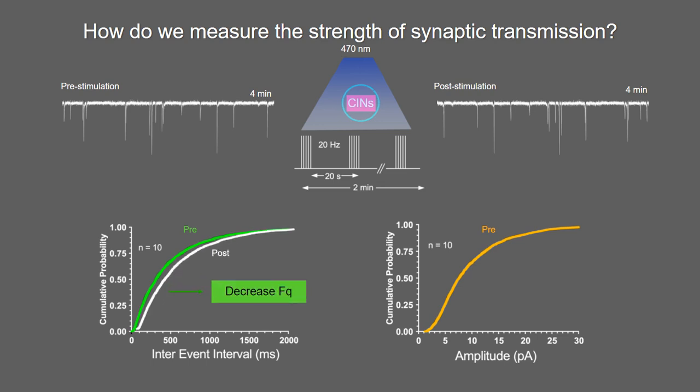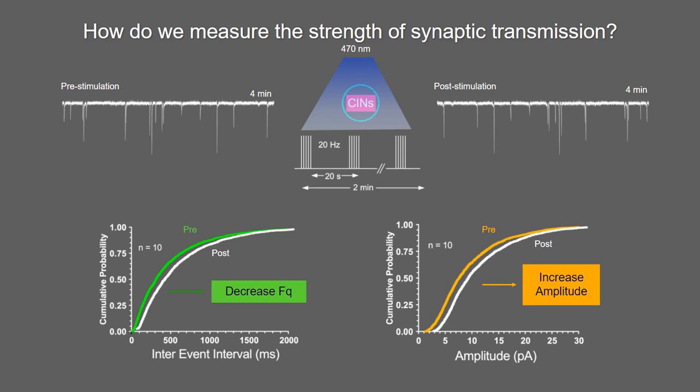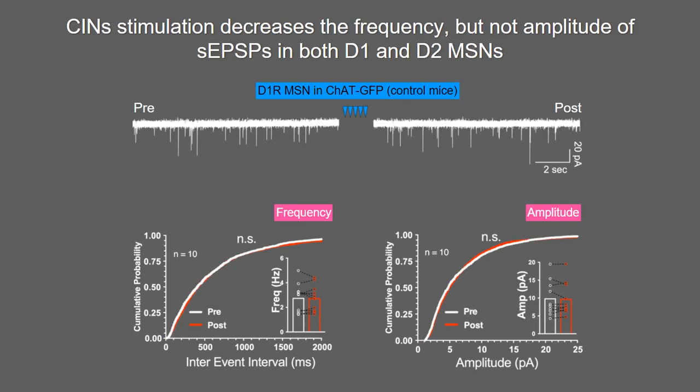Before proceeding, we had to confirm that the light stimulation itself would not create a bias. We recorded spontaneous activity in ChAT-GFP mice, which have no channelrhodopsin in cholinergic interneurons — just GFP. When we stimulated the tissue, there was absolutely no change in either frequency or amplitude. The pre- and post-stimulation curves are perfectly superimposed, confirming that any effects we observe are due to channelrhodopsin activation specifically.